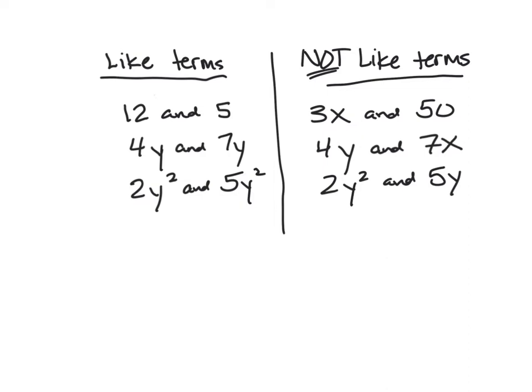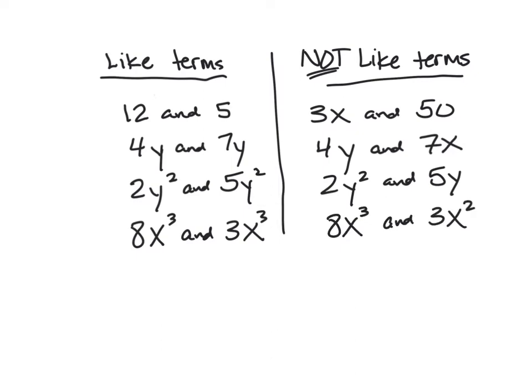One more example of a like term: 8x³ and 3x³. These are the same variable representing the same unknown number raised to the same power — the third. I could put those together: 8x³ and 3x³ is 11x³. What's not like terms: if I have the same variable but one raised to the third power and the other raised to the second power, those are different numbers because of those exponents. These are unlike terms.